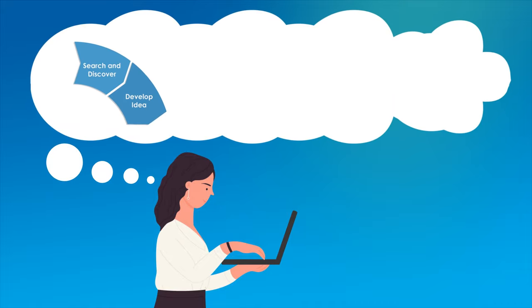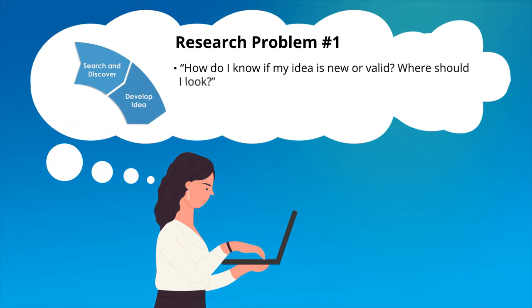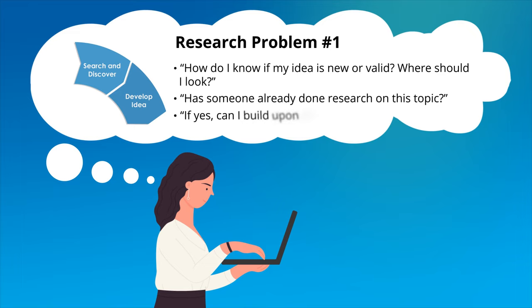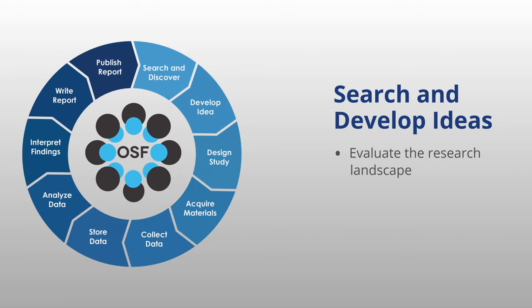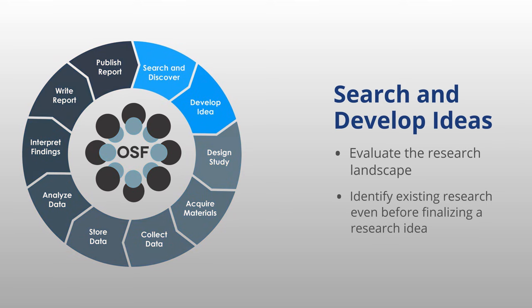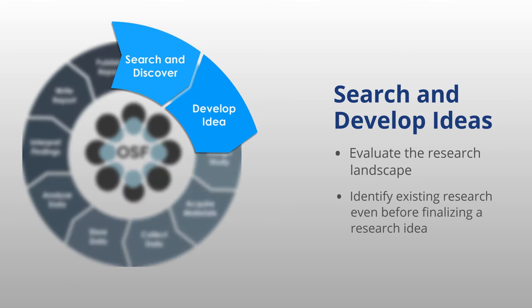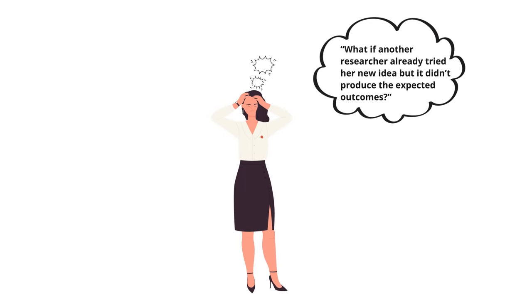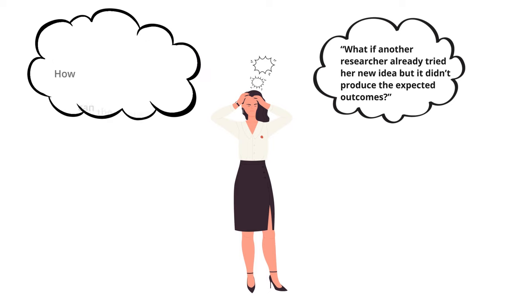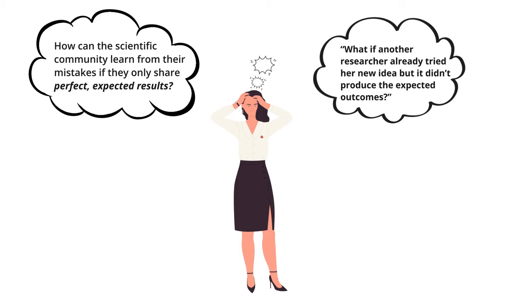Sophia, like most researchers, is always brainstorming new ideas for studies that can contribute to her field in exciting ways. Before a new idea takes shape, she evaluates the research landscape to see what has been investigated recently. Traditionally, she's always used reference platforms or specific journals, but many publications can have outdated results and often provide only information regarding successful studies. What if another researcher had tried her new idea but it didn't produce the expected outcomes? How can the scientific community learn from their mistakes if they only share perfect expected results?